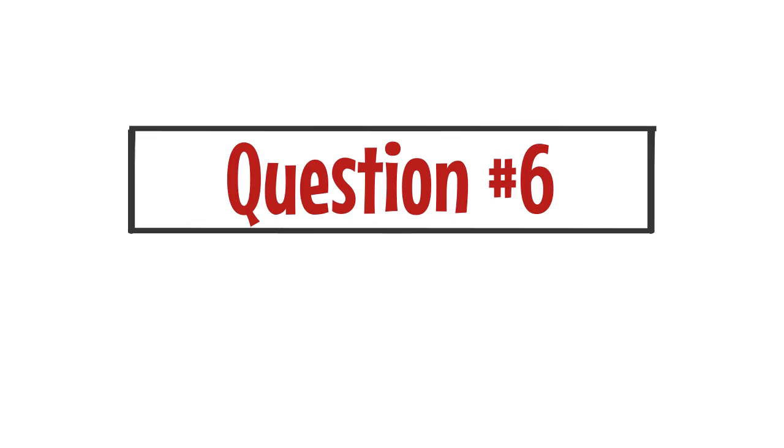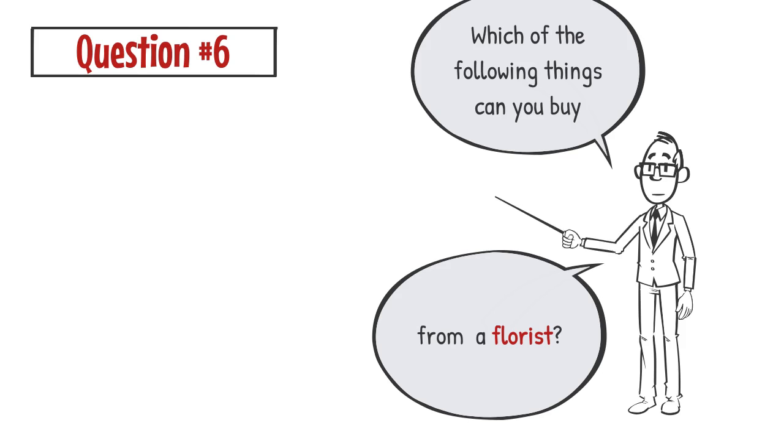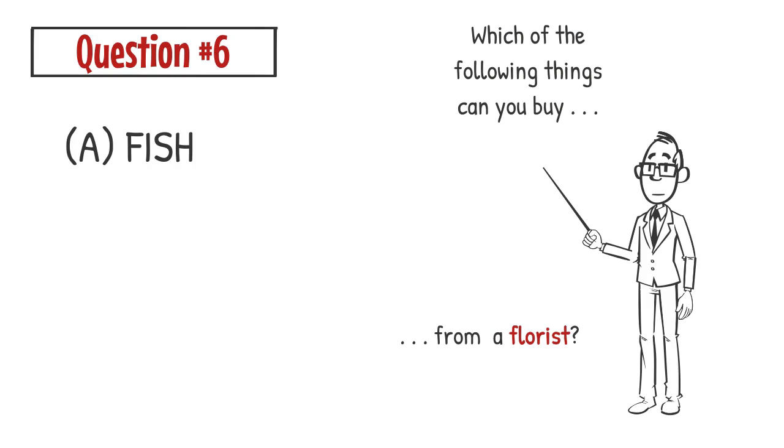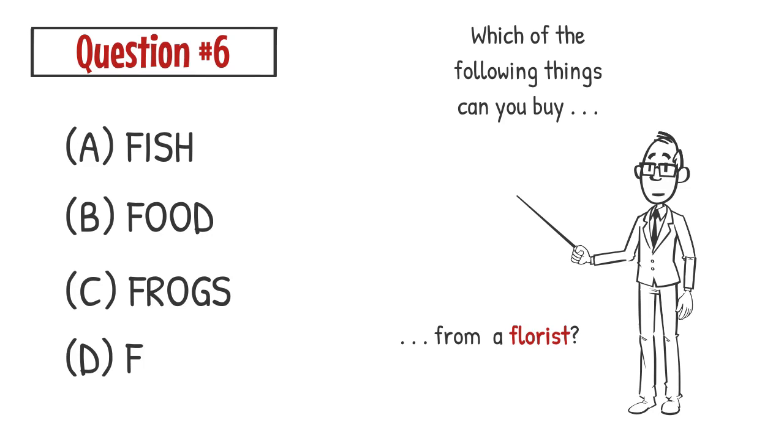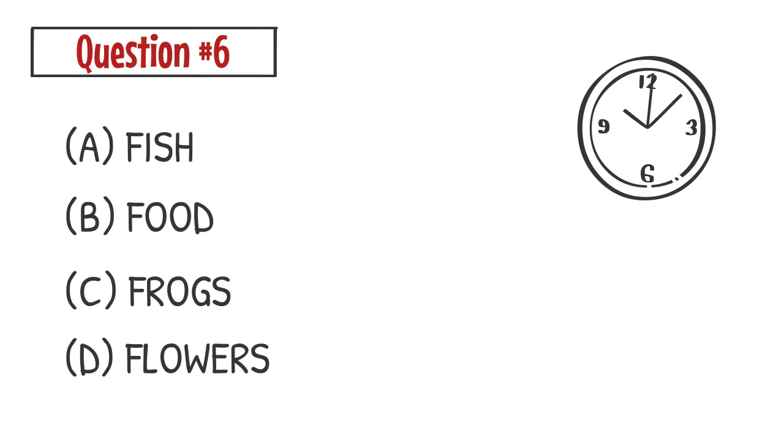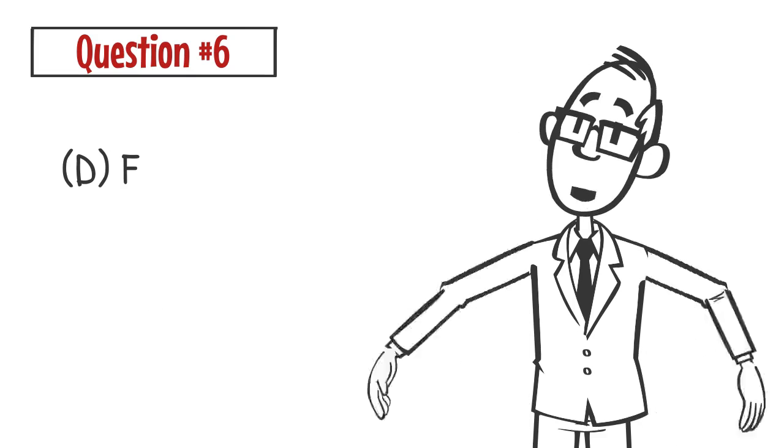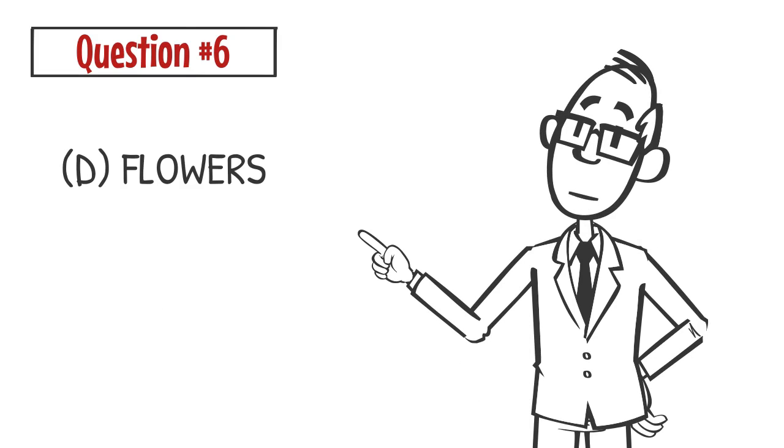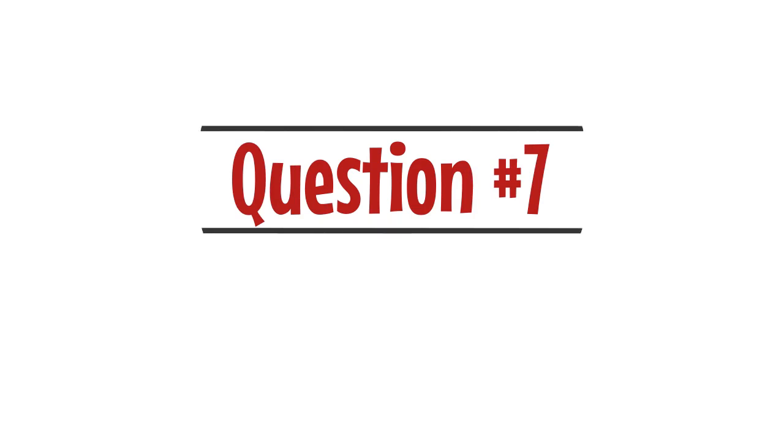Question number 6: Which of the following things can you buy from a florist? A. Fish B. Food C. Frogs D. Flowers. The correct answer is D. You can buy flowers from a florist.